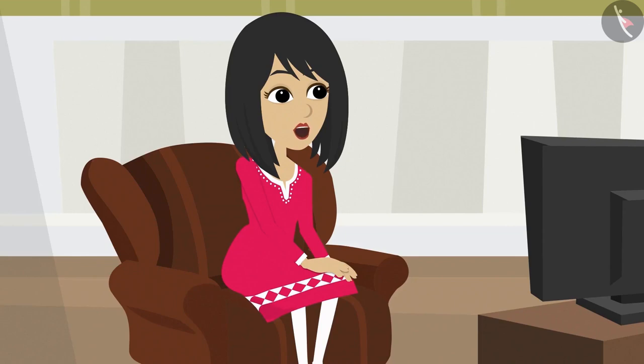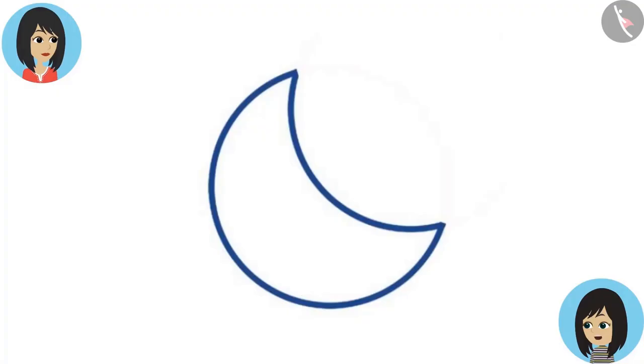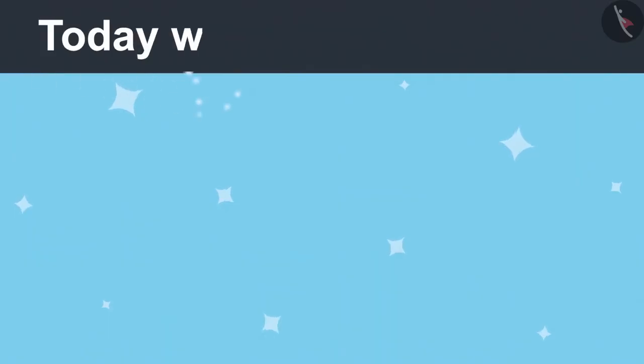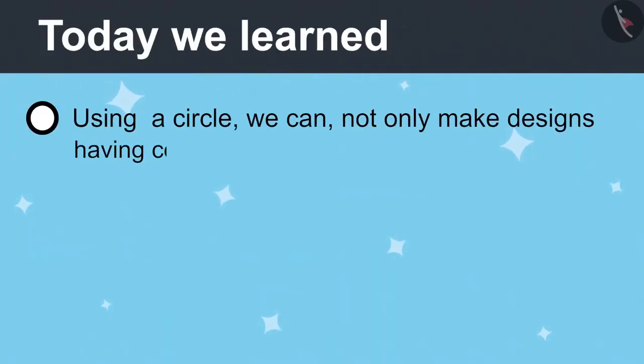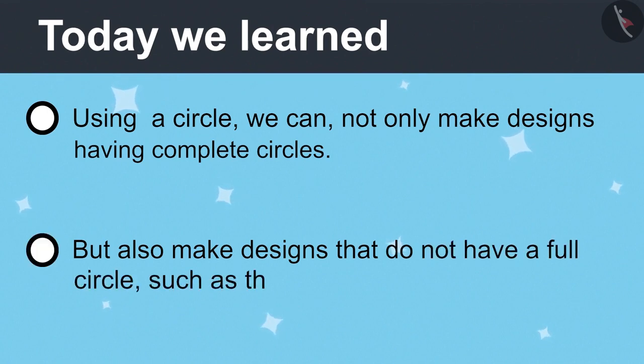You have become very intelligent. Thank you. But you see that no full circle is visible in this shape. Yet it is a shape made from a circle. This means, using a circle, we can not only make designs having complete circles like rangoli, but also make designs that do not have a full circle, such as the moon.